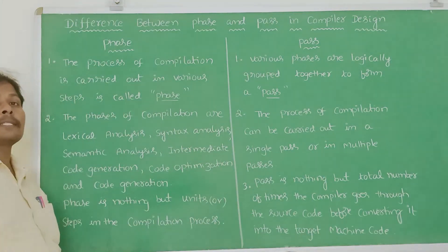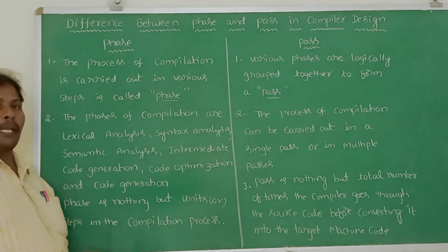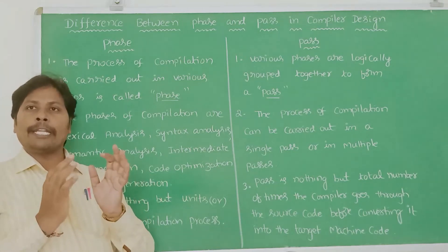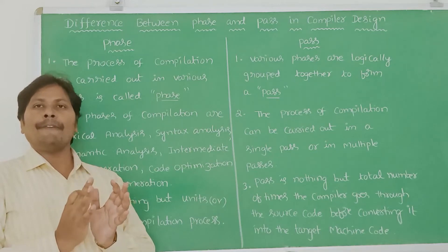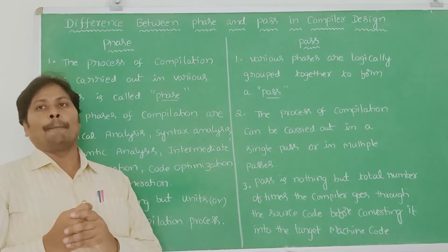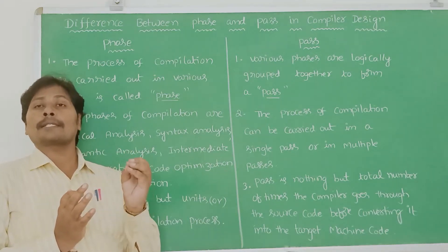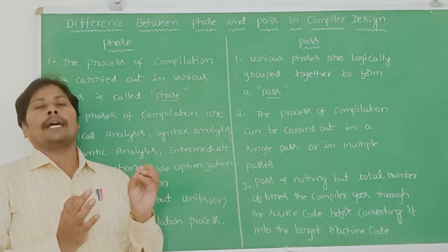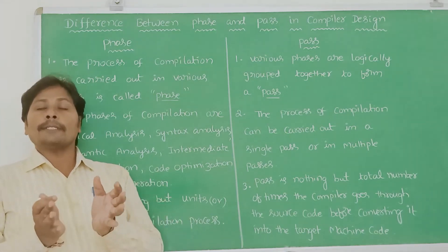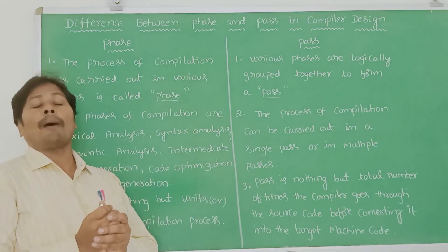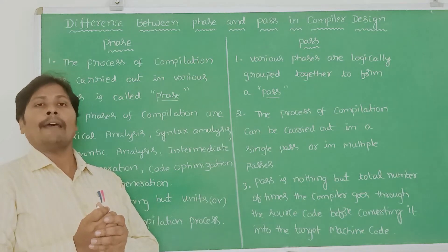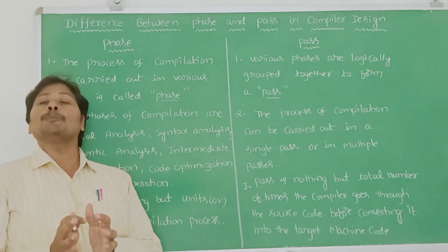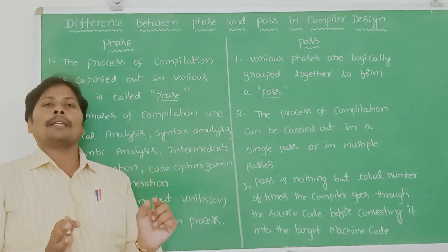So that is nothing but pass — how many number of times the compiler goes through the source program before generating the target code. These are the main three differences between phase and pass of a compiler. The simple definition is: the process of compilation is carried out in various steps, and those steps can be called as phases. The common phases are lexical analysis, syntax analysis, semantic analysis, intermediate code generation, code optimization, and code generation.